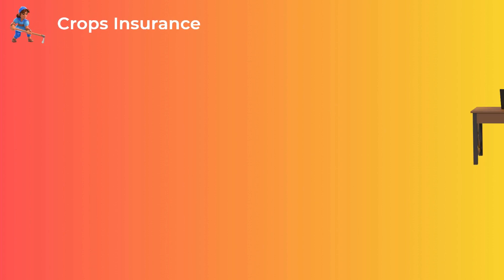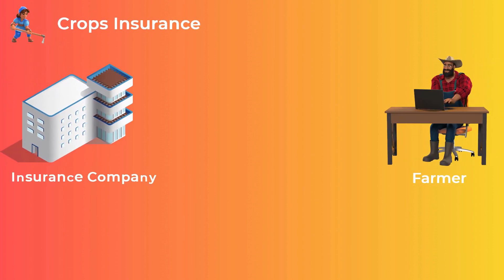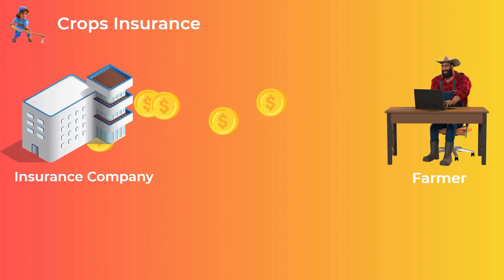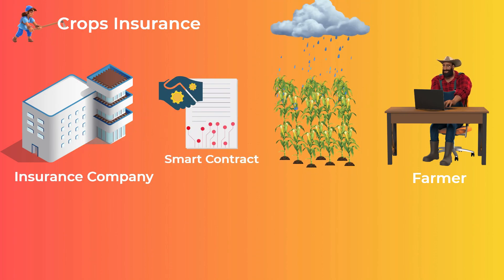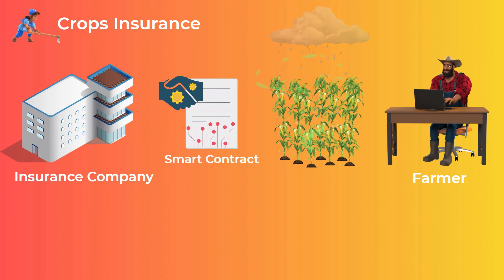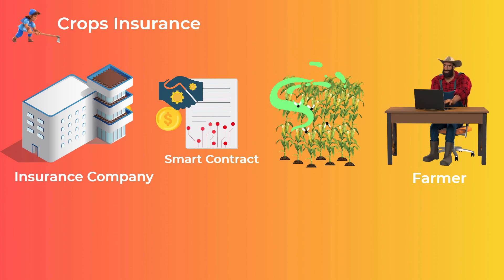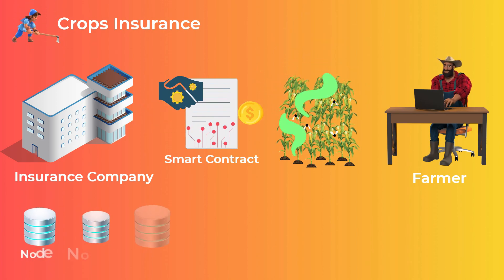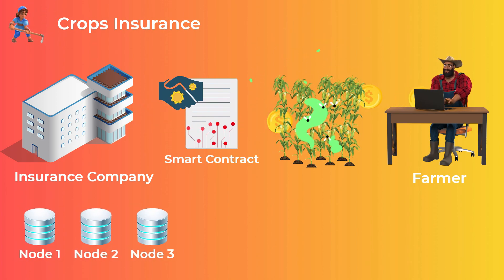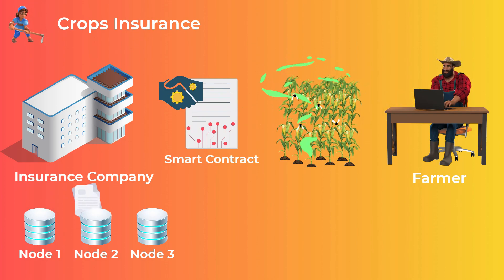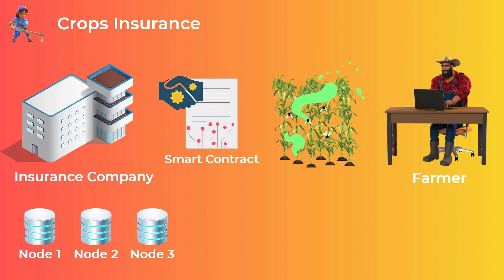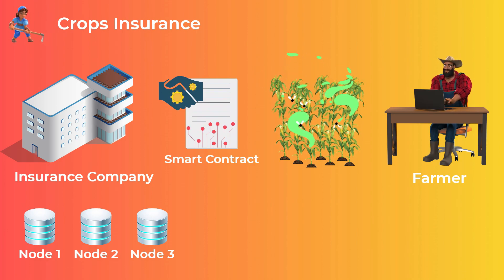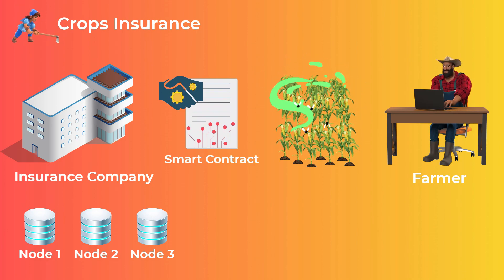This also reduces costs for insurance companies by eliminating manual case processing. The same concept applies to crops insurance — farmers worldwide can have insurance for their crops, and when bad weather conditions like rain damage their crops, the smart contract automatically sends them their insurance payment. Oracles in this case supply weather condition data such as temperatures and rainfall to the smart contract.